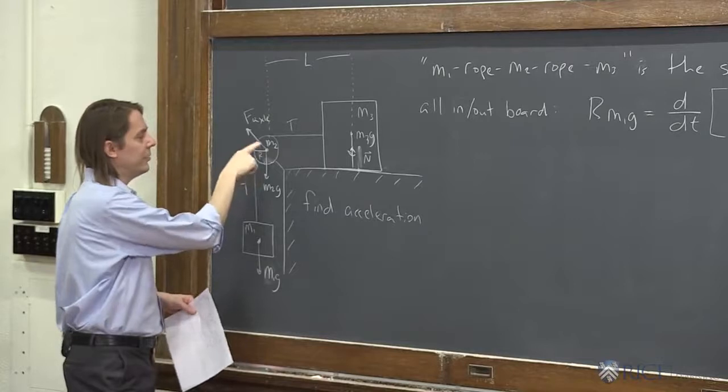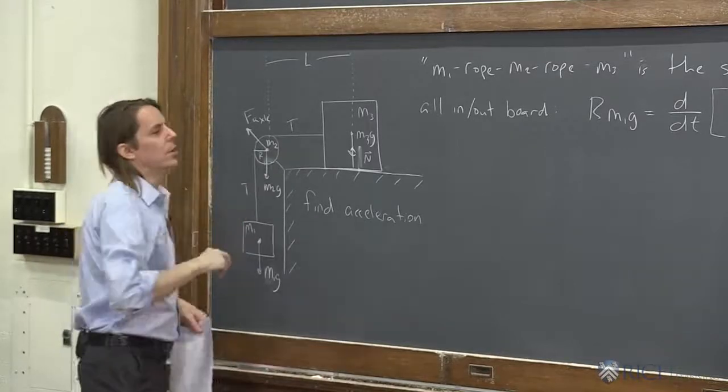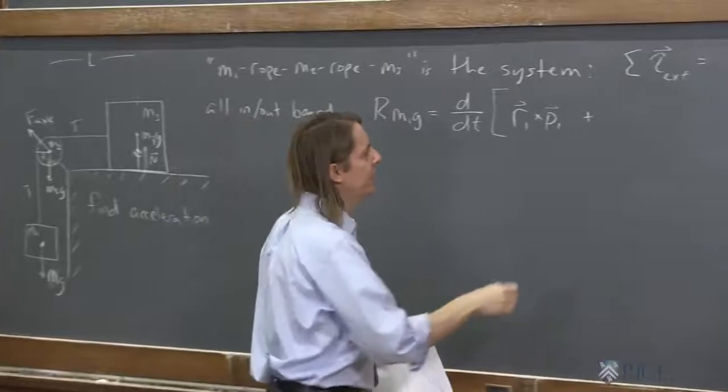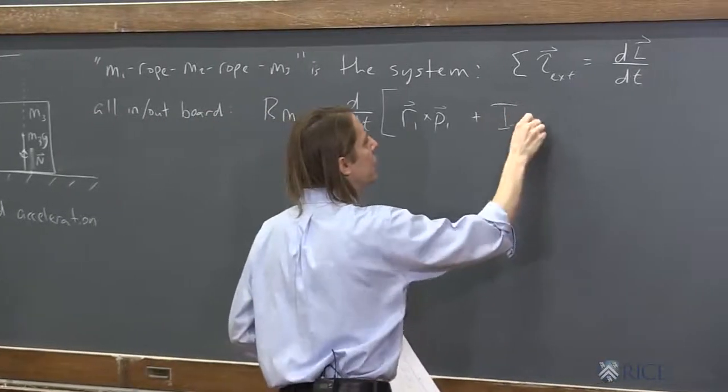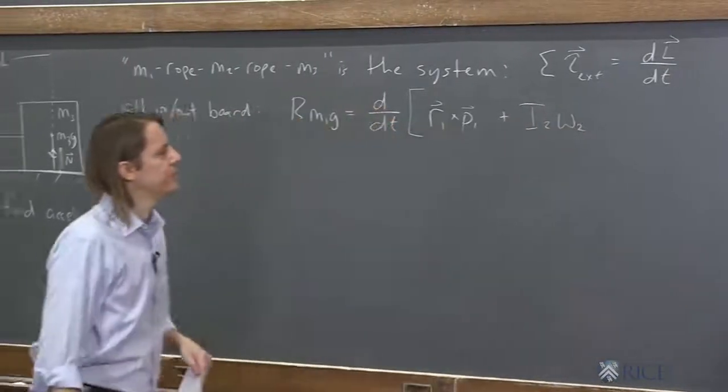This is rotating. It's not translating. And since we put the axis right on the center, we don't need a parallel axis theorem. We can just say it's I2 omega 2. That's its angular momentum.